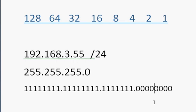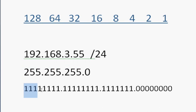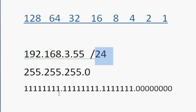So 255.255.255.0 in binary is all ones for the first three octets, and then zeros for the last octet. If you count up all those ones, there are 24 ones — that's where the slash 24 comes from. So it's 24 ones and eight zeros.